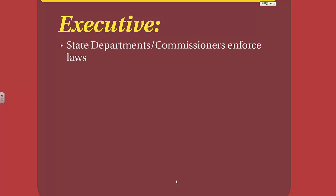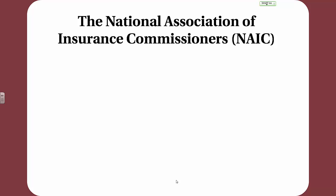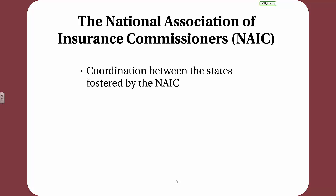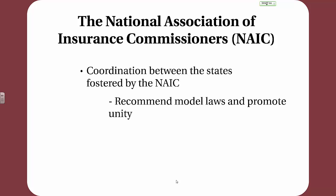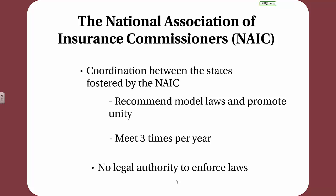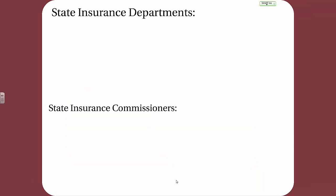Next, the executive branch. These are state departments and commissioners who enforce the laws against insurance companies and other insurance entities. The National Association of Insurance Commissioners fosters coordination between the states, recommends model laws, and promotes unity — meeting three times per year. But keep in mind they have no legal authority to enforce any laws. Nothing the NAIC does is legally binding unless the individual state department adopts the NAIC model law or rule.